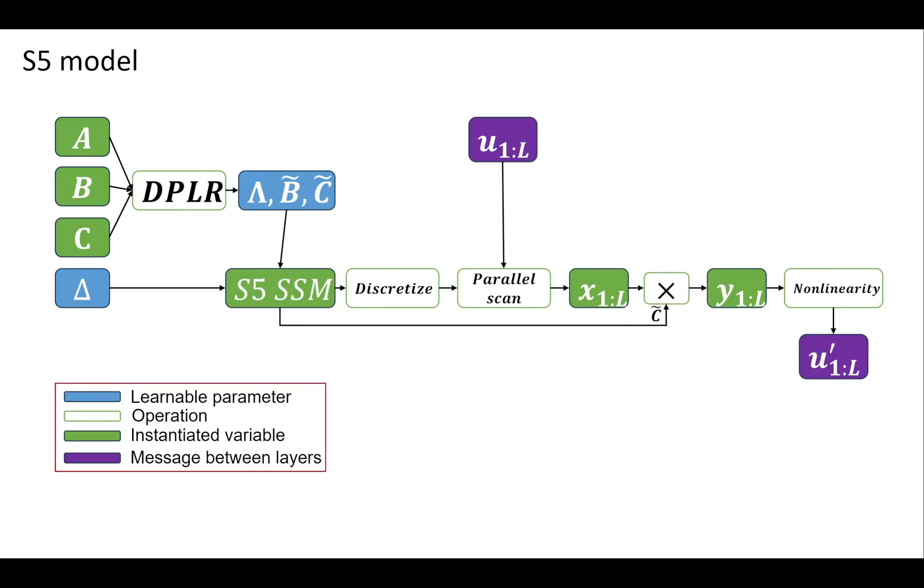In the S5 layer, a parallel scan technique is applied to a diagonal linear SSM to obtain the SSM outputs. This method eliminates the need for frequency domain operations and convolution kernel computations required by S4, resulting in a model that operates purely in the time domain.